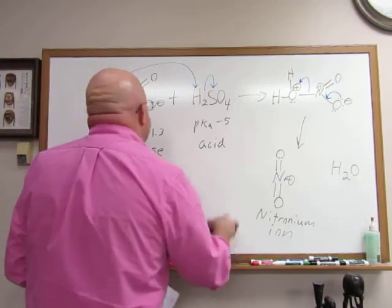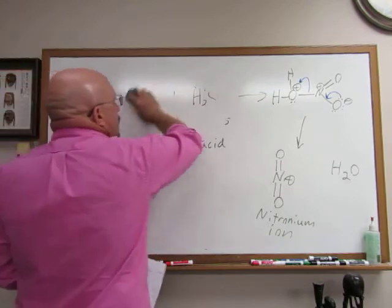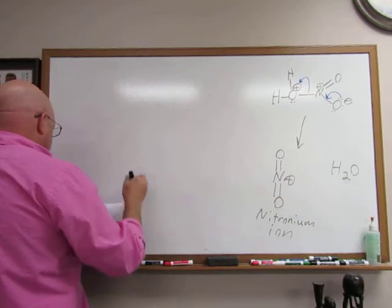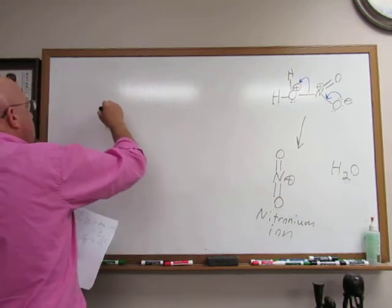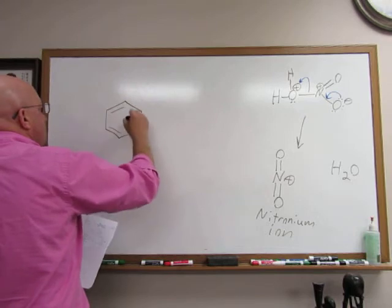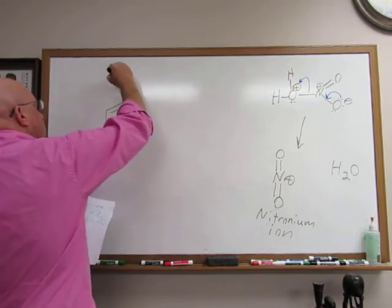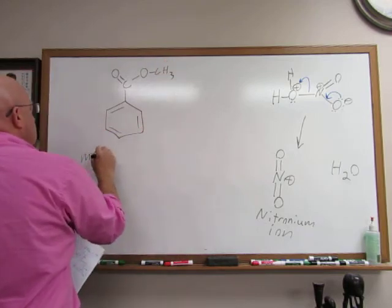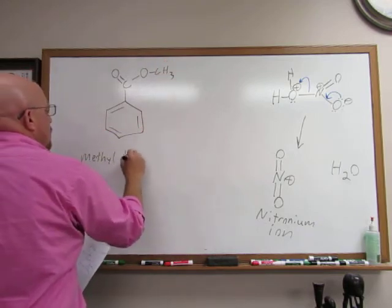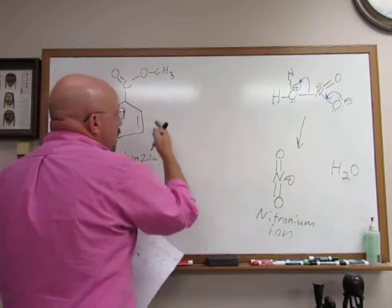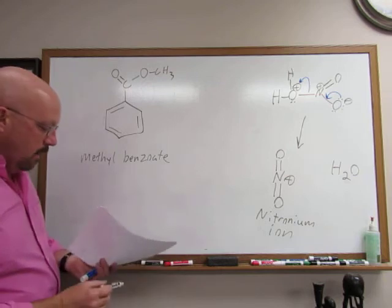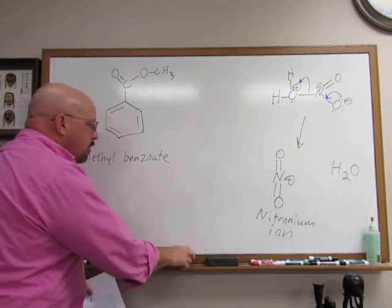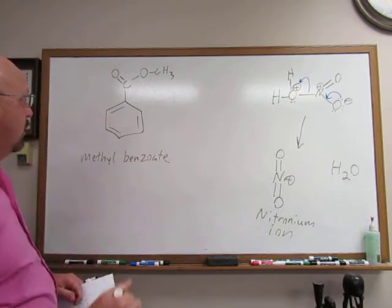This species is called a nitronium ion, and this is our electrophile that we're going to be reacting with the aromatic ring. The aromatic compound we are reacting with this week is methyl benzoate. It already has a substituent on the ring, so we know that the substituent already present on the ring will direct the next substituent as to where to go.